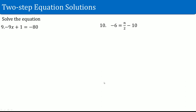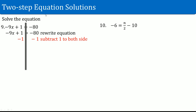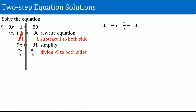Number nine: negative 9x + 1 equals negative 80. Rewrite the equation and draw the line straight down. On the variable side, you have negative 9 times x and a plus 1. Deal with the plus 1 first — it is the outermost thing — so subtract 1. One minus 1 cancels out. You are left with negative 9x on the left-hand side. On the right-hand side, negative 80 minus 1 becomes negative 81. Divide by negative 9 on both sides. Negative 9 over negative 9 cancels out. On the right-hand side, negative 81 divided by negative 9 is positive 9. So x equals 9.